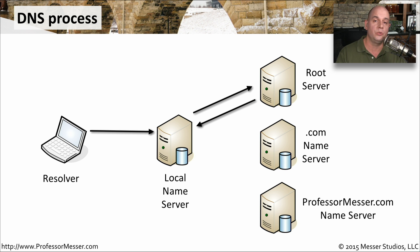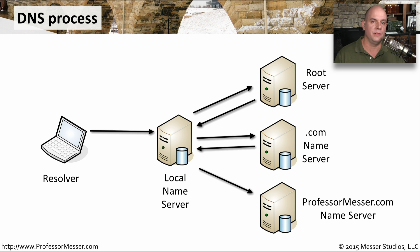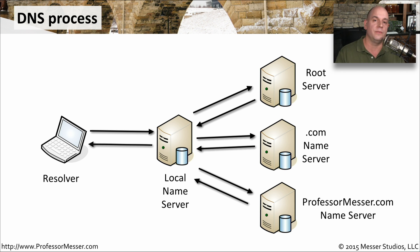Now that the local name server knows where the .com server is, it repeats the process to the .com server and asks how do I get to professormesser.com? The .com name server says James has set up a DNS server just for his local purposes, here's the information you need to find that particular name server. Now that your local name server knows how to get to my name server, it communicates directly to the professormesser.com name server. I now provide the IP address of my web server back to the local name server, and the local name server tells your workstation here is how you get to professormesser.com through this particular IP address.